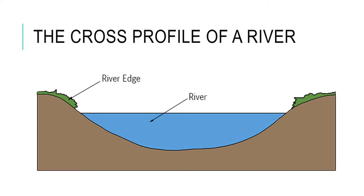That differs from the cross profile. The cross profile is basically a cross section — you can see here the river has been split in half and we are interested in simply what the river looks like. I just want you to consider for a moment why it's important that we are aware of both of these things.